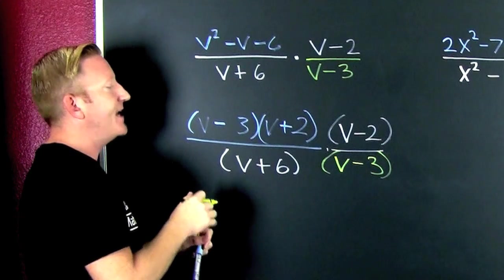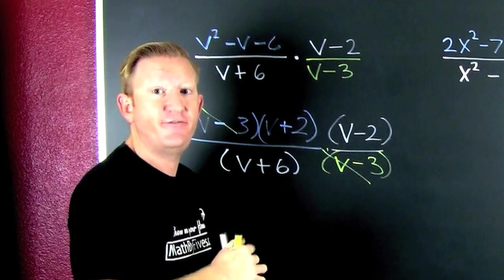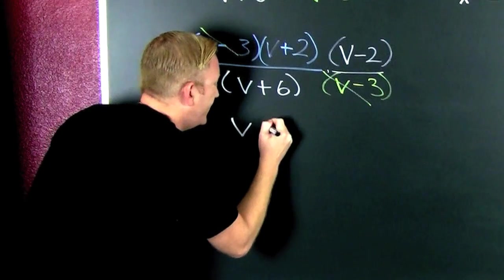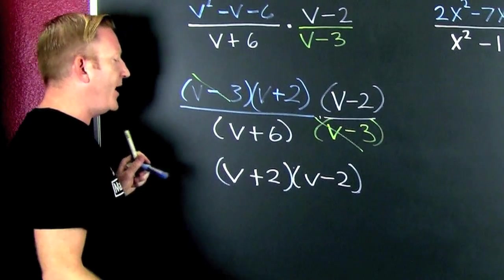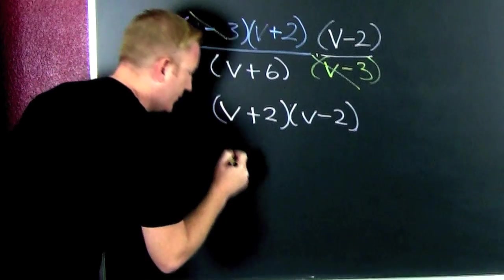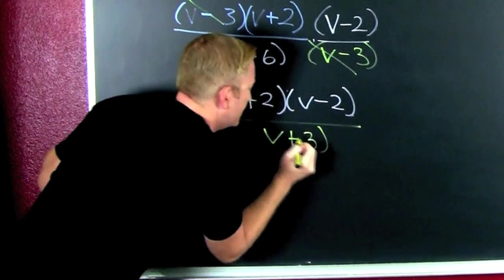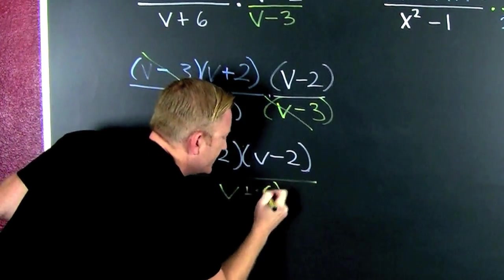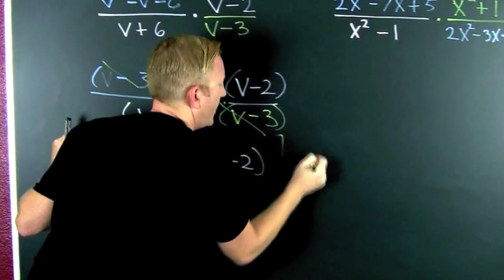Now I see if I can cancel any terms. Now let's leave it in fully factored form — this is going to be a V plus 2 times a V minus 2. Isn't that V squared minus 4? Sure it is. But I want to leave it in fully factored form. And then down there on that denominator I'm going to have a V plus 6. And that was a sick problem.